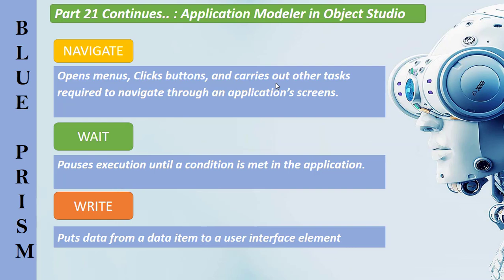First, let's learn theoretically about the navigate stage, wait stage, and write stage. The navigate stage opens menus, clicks buttons, and carries out other tasks required to navigate throughout the application screens. The wait stage is used to enable a business object to pause and wait for an application element — it pauses execution until a condition is met. For example, a business object might need to wait until a particular window has appeared before proceeding, or wait for the entire application to finish loading. The write stage puts data from a data item to a user interface element.